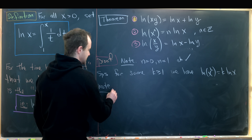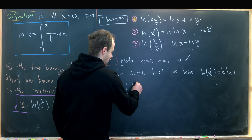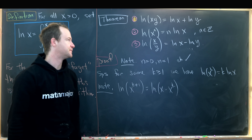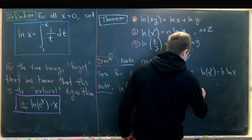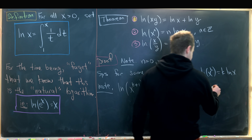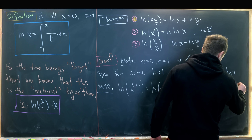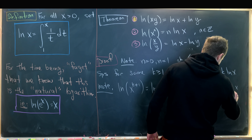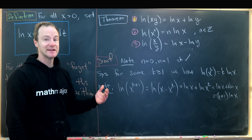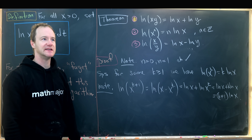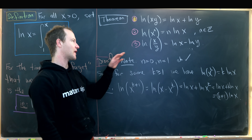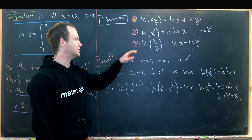We have ln(x^(k+1)) = ln(x · x^k). Applying property 1, that equals ln(x) + ln(x^k). By the induction hypothesis, that's ln(x) + k · ln(x), which equals (k+1) · ln(x) — exactly what we needed. That handles the non-negative integer case. The case for negative integers is best done as a quick application of property 3, which we'll leave as a homework problem.